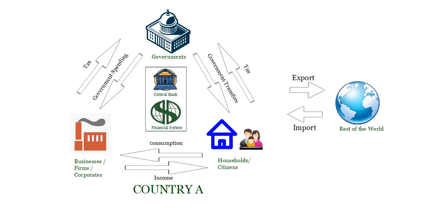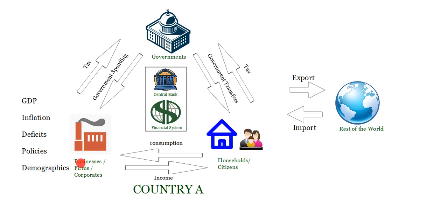Let me show you the concepts we are going to cover in macroeconomics: we are basically going to cover GDP, inflation, deficits, policies, and demographics. We'll explain these in future videos. What is GDP? GDP is a short form for gross domestic product — it basically measures the total value of the goods and services produced by any particular country, measuring the total value of output produced by the firms.